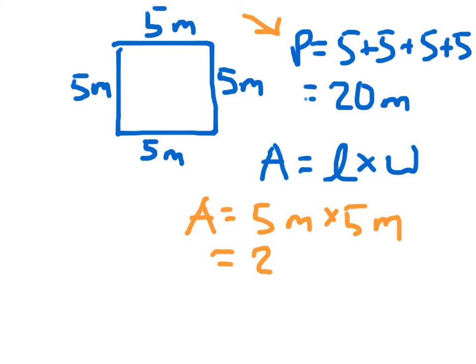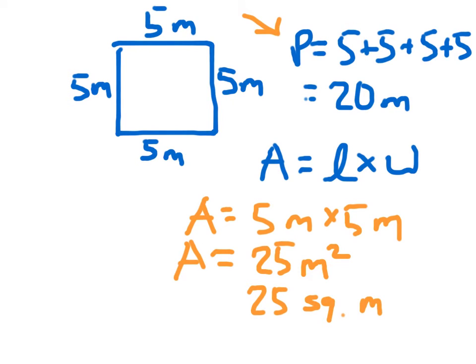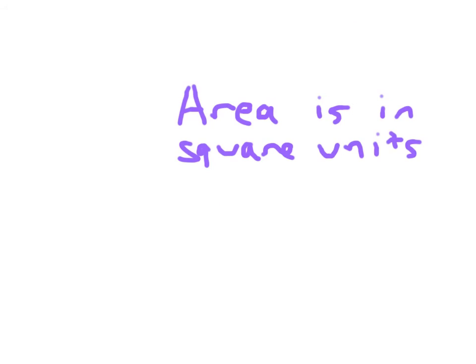5 times 5 is 25. Now, what was the label again? 25 what? In this case, it's not going to be inches as before. It's going to be meters — square meters. We can write it with the exponent there: m squared, square meters, 25 square meters. If you're more comfortable writing it out, you can also write it out, just abbreviate it as square meters. So the measurement of area is in square units.